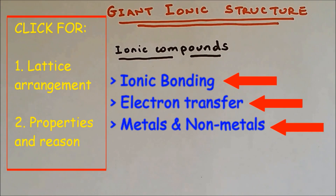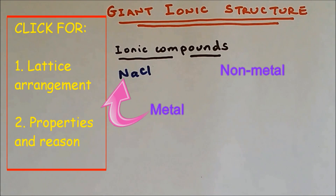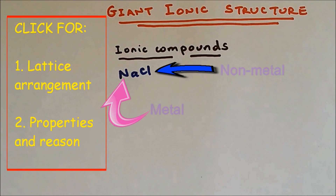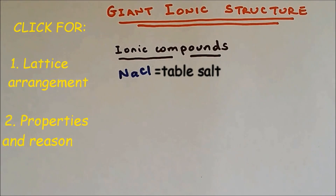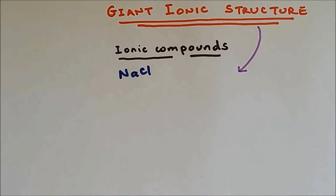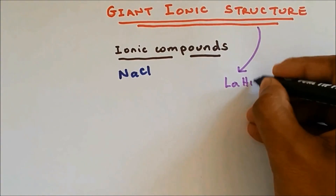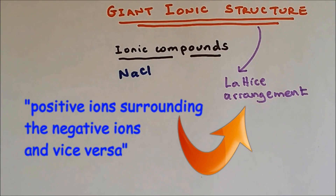The classic example of an ionic compound is NaCl, where Na is the metal and chlorine is the nonmetal. NaCl, which is also known as table salt, forms into a giant ionic structure. Giant ionic structure also has a different name, which is known as lattice arrangement. Lattice arrangement is when a positive ion gets surrounded by the negative ion and the negative ion is surrounded by the positive ion.